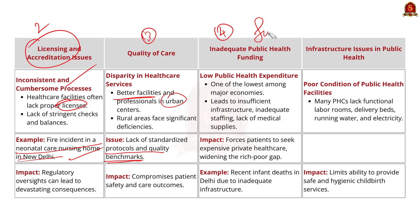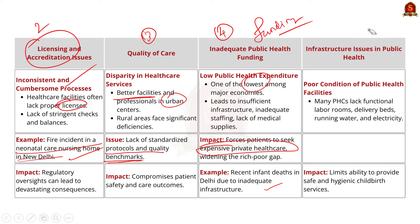The absence of standardized protocols and enforcement of quality benchmarks contributes to inconsistency, compromising patient safety. Fourthly, India's public health expenditure remains one of the lowest among major economies. This underfunding leads to insufficient infrastructure, inadequate staffing, and a lack of essential medical supplies in public health institutions. The overburdened public health system forces many patients to seek expensive private healthcare. For example, many public hospitals and primary healthcare centers in India lack adequate infrastructure, and a significant number of primary health care centers do not have functional labor rooms, delivery beds, or basic amenities such as running water and electricity.